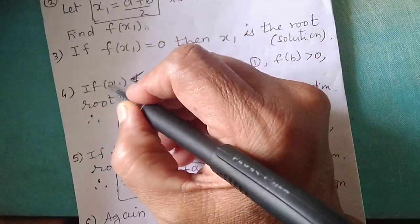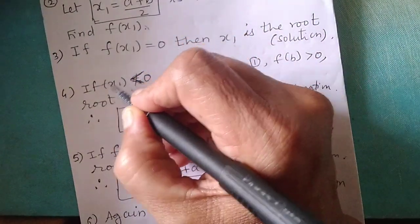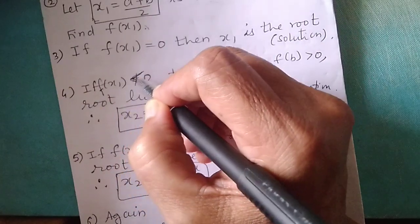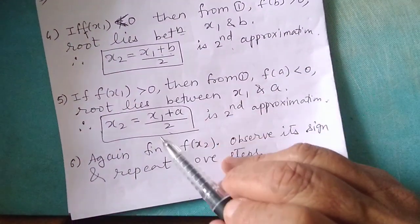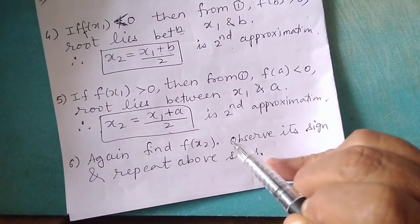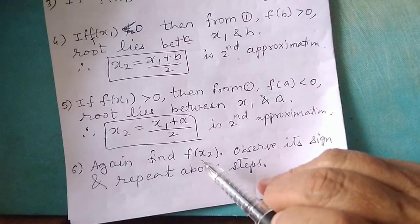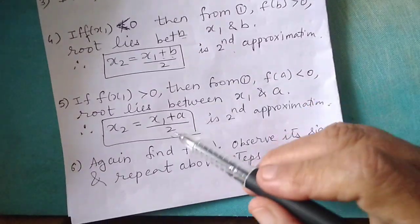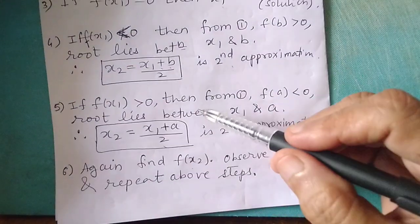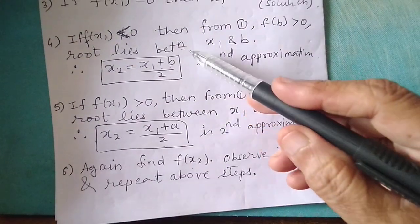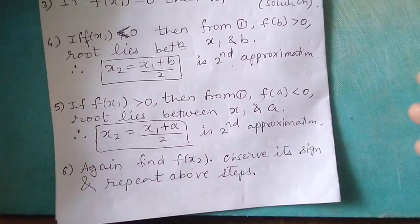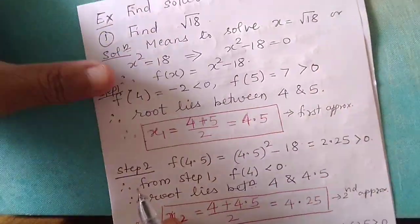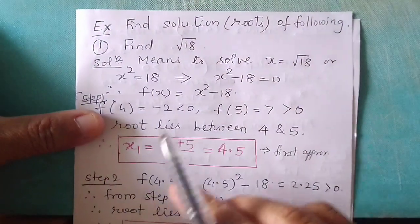Depending on the sign of f of x1, we find f of x2. If f of x2 is positive, look where it is negative. If f of x2 is negative, look for the positive value in the step above. I have solved five examples, so hopefully you will understand the concept here.